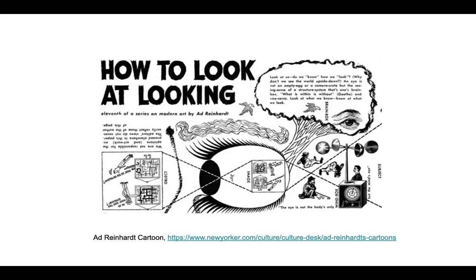We're going to end this presentation the same way it started, with a cartoon. This one was made by the American artist Ad Reinhart, and it's called 'How to Look at Looking.' A staunch proponent of abstract art, Reinhart developed a whole series of cartoons devoted to unpacking the mystery of non-objective art. Looking at art and talking about art go hand in hand, and with practice you will become better at both. That's it for today — thanks everyone for watching!